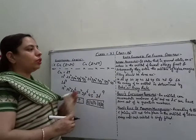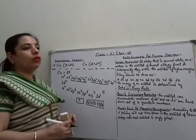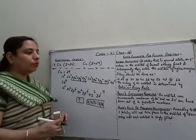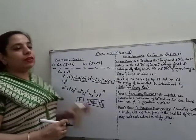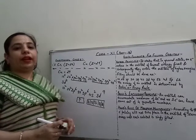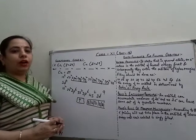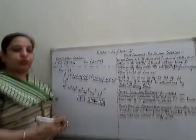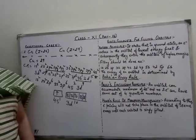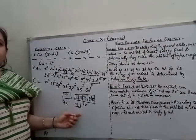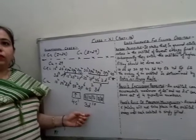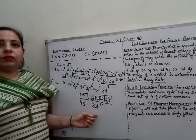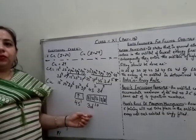So this was all about quantum numbers and the distribution of electrons in the orbitals. Thank you.